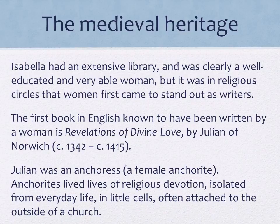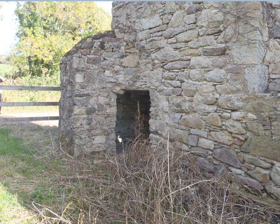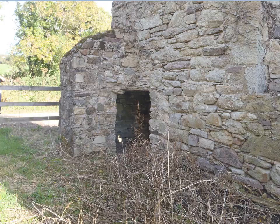Julian of Norwich was what was called an anchoress — a type of hermit who, because of religion, decides to live their life alone, away from other people. She was a female anchorite. They lived in little cells attached to the outside of a church — sometimes a cave somewhere. That is a surviving anchorite cell on the outside of a church still standing in England. Anchorites like Julian of Norwich frequently lived in those kinds of places. It doesn't look terribly comfortable, but it wasn't meant to be — they were supposed to be sacrificing their lives for a spiritual insight.